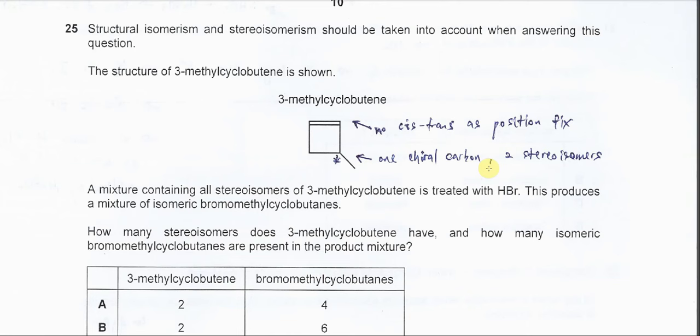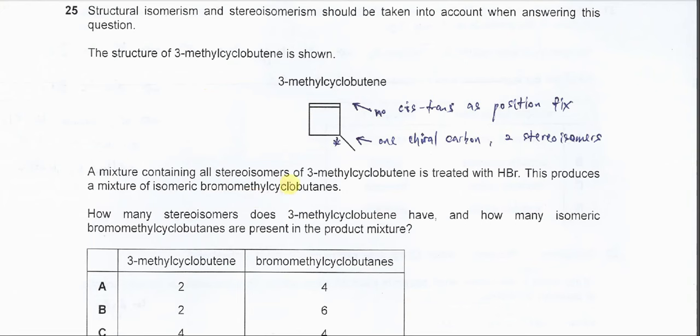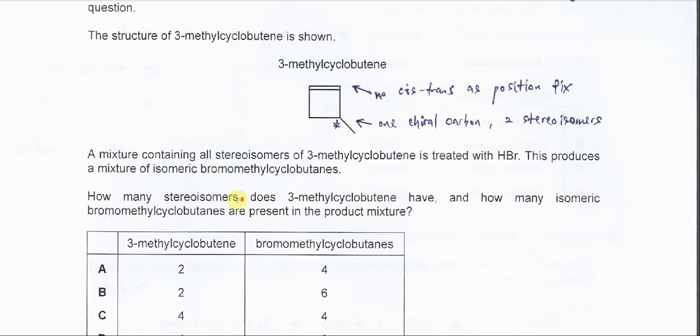Question 25. The structure of 3-methylcyclobutene is shown. A mixture containing all stereoisomers of 3-methylcyclobutene is treated with HBr. This produces a mixture of isomeric bromomethylcyclobutenes.